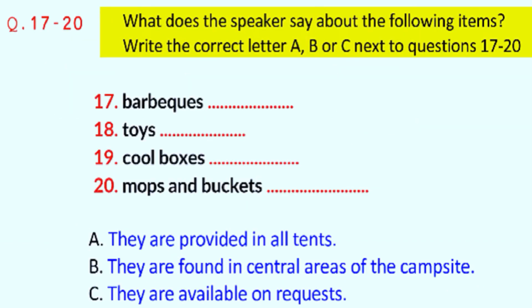Before you hear the rest of the talk, you have some time to look at questions 17 to 20. Now listen and answer questions 17 to 20. When it comes to our tents, these are equipped to the highest standard. We really do think of every essential detail, from an oven and cooking rings fuelled by bottled gas to mirrors in the bedroom areas. If you don't want to cook indoors, you can borrow a barbecue if you ask in advance, and there's even a picnic blanket to sit on outside your tent. Inside, a box of games and toys can be found, and children's tents can be hired if required.